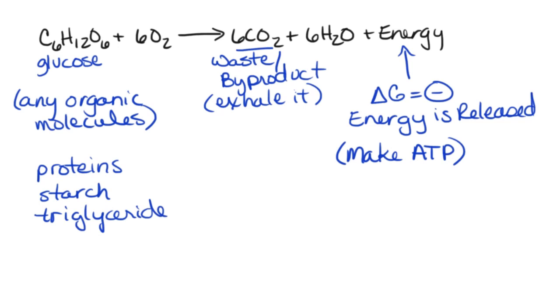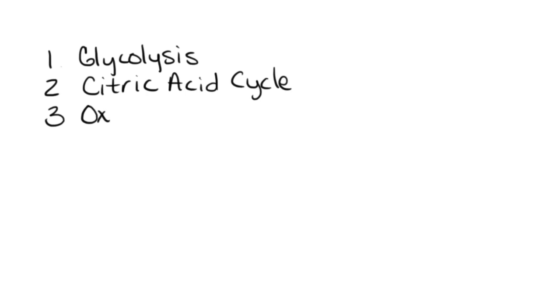Now that overall process of cellular respiration can be broken down into three distinct phases. If we list those phases here, the first one is going to be what we call glycolysis. The second one has a number of different names, but we're going to refer to it as the citric acid cycle. And then the third one has the longest name of all, and that's going to be oxidative phosphorylation.